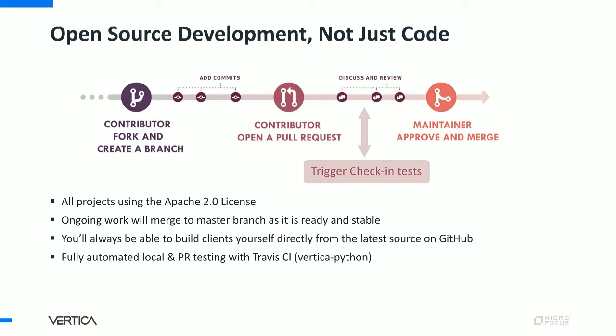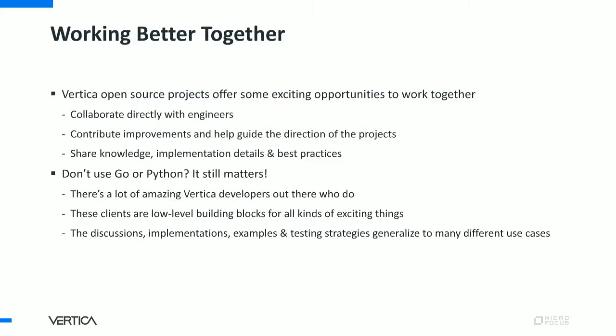We want to make this easy not just to use, but also to contribute, understand, and collaborate with us. All these projects are built using the Apache 2.0 license. The master branch is always available and stable with the latest greatest functionality. You can always build it and test it the way we do — it uses automated testing both locally and with pull requests, and for Vertica Python, it's fully automated with Travis CI. This offers exciting opportunities to collaborate with you more directly than we ever have before. You can contribute improvements and help guide the direction of these projects, and you can also work with each other to share knowledge, implementation details, and various best practices.